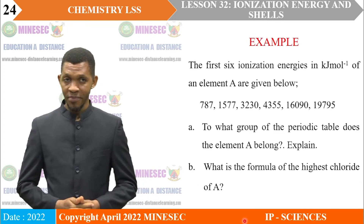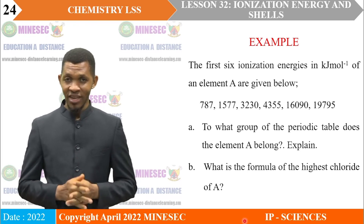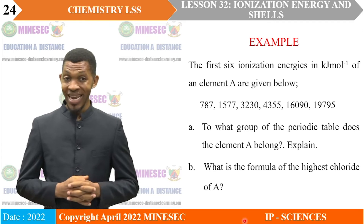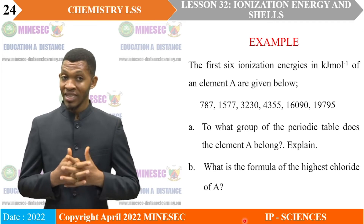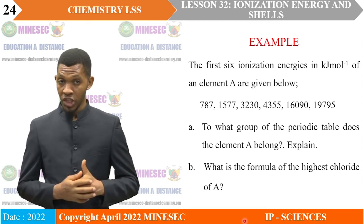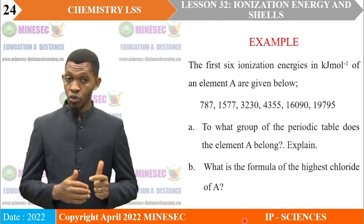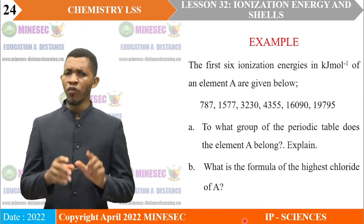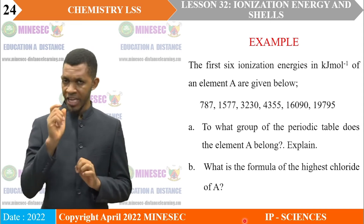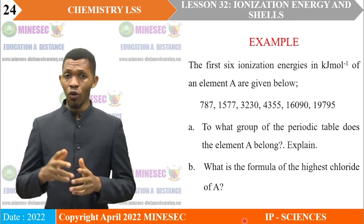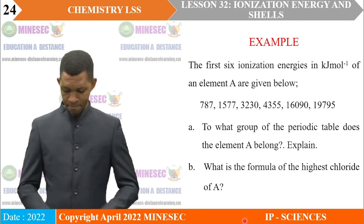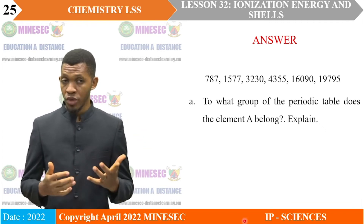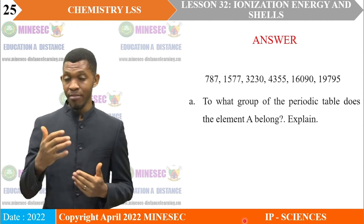Example: the first six ionization energies in kJ/mol of an element A are: 787, 1,577, 3,230, 4,355, 16,090, and 19,795. A: To what group of the periodic table does element A belong? Explain. The group number of an element is given by the number of valence electrons. Group 1 elements have one valence electron, Group 2 have two, Group 3 have three, and so on.